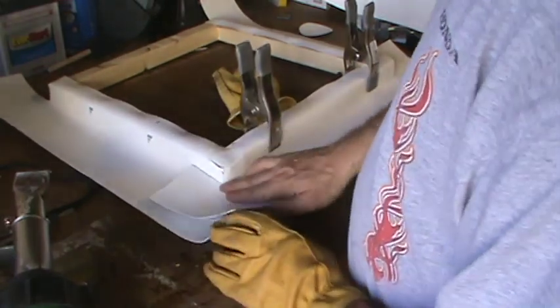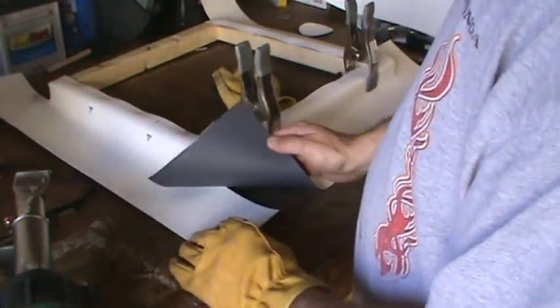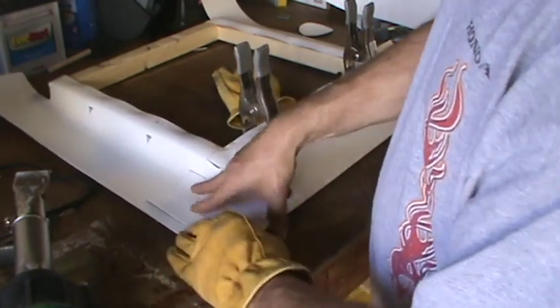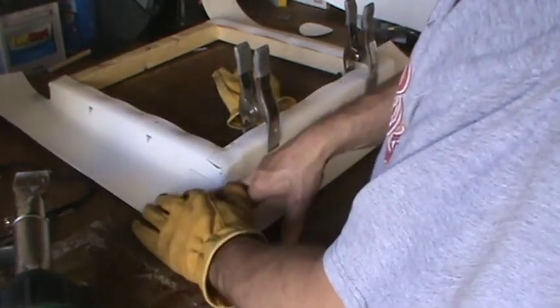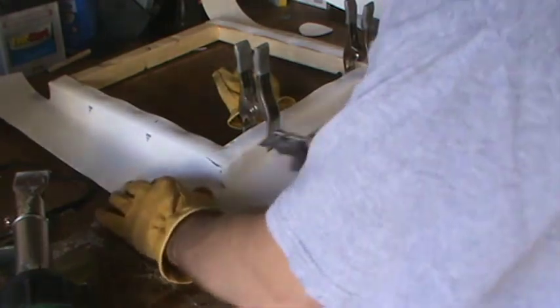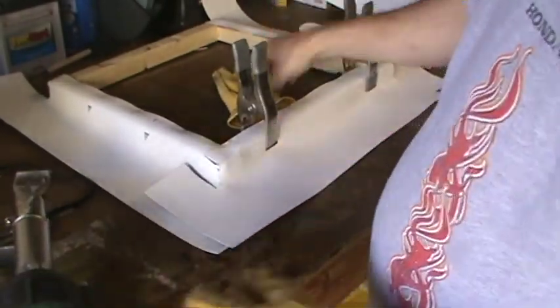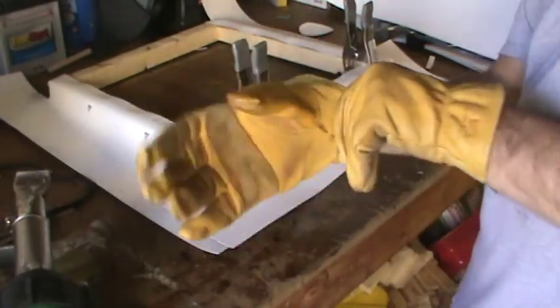And now I'm just going to heat weld this portion to this portion and trim this piece a little bit there. Give me a nice place to heat weld there, so let me heat weld that up, and then the other corners will be just the same.